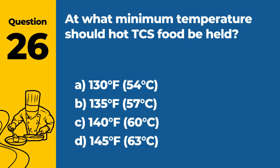Question 38: How should a food handler with an infected wound on their hand proceed? A. Cover the wound with a bandage and a glove before handling food. B. Wash the wound with soap and continue working. C. Stop working and seek medical attention. D. Only work with packaged food items. Answer: A. Cover the wound with a bandage and a glove before handling food. A food handler with an infected wound on their hand should cover the wound with a bandage and wear a glove before handling food to prevent contamination.